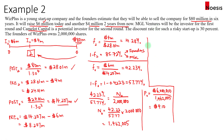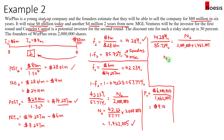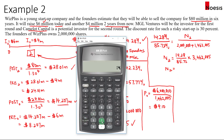Now for Camelot Capital: Camelot owns fourteen point two eight percent, and the founders plus MGL hold the remaining eighty-five point seven two percent. The founders hold two million shares and MGL holds one point four six two million shares, for a combined total of three million four hundred sixty-two thousand and five shares. N2 for Camelot Capital equals fourteen point two eight percent divided by eighty-five point seven two percent, multiplied by three million four hundred sixty-two thousand and five shares, giving Camelot Capital approximately five hundred seventy-six thousand seven hundred and thirty-two shares.